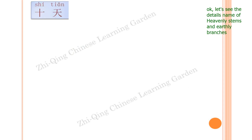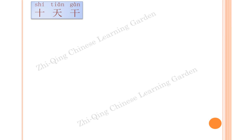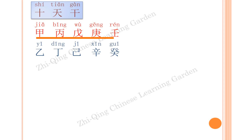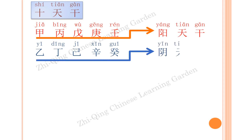Let's see the detailed names of heavenly stems and earthly branches. The ten heavenly stems are: jia, yi, bing, ding, wu, ji, geng, xin, ren, gui. Jia, bing, wu, geng, ren are the yang ten gan. Ji, ding, ji, xin, gui are the yin ten gan.